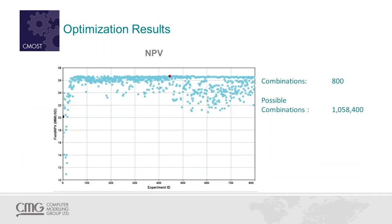CMOST ran the history match of the core in 1 hour and 40 minutes — very fast — and the optimization took 13 hours total. From the parameters evaluated, the possible combinations were above 1 million experiments, and we found the answer in about 450 runs. We started above $20 million US dollars in net present value, and then CMOST began optimizing the function, reaching the optimum value at around $27 million US.